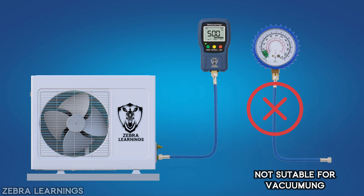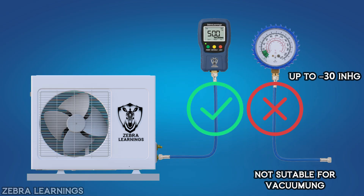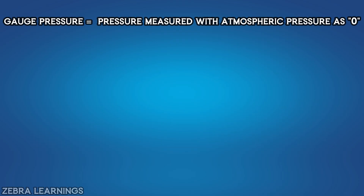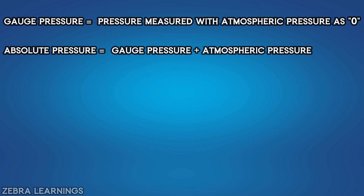The manifold gauge can show only rough vacuum values, up to minus 30 inches of mercury, but to know the exact deep vacuum, we must use a micron gauge. That's why we say: gauge pressure equals pressure measured with atmospheric pressure as 0, and absolute pressure equals gauge pressure plus atmospheric pressure.